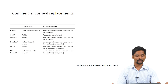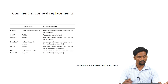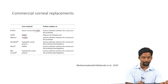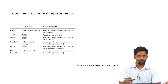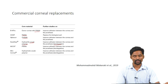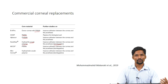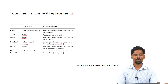These are a few commercially available corneal replacements. As you can see, most of the core materials used are synthetic in nature — PMMA, poly-HEMA, and acrylic polymers. The major drawback of these commercially available replacements is integration — the poor adhesion between the cornea and the tissue engineering construct. Hence, future studies should focus on improving integration with the host tissue.